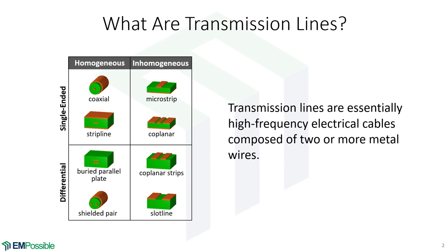Sometimes these single-ended lines are called unbalanced lines, and the differential lines are called balanced. We can also look at these in terms of homogeneous and inhomogeneous. In a homogeneous line, all of the dielectric around the line is the same material. A coax is homogeneous — everything the electric and magnetic fields see is the same material — and that also applies to the strip line, buried parallel plate, and shielded pair.